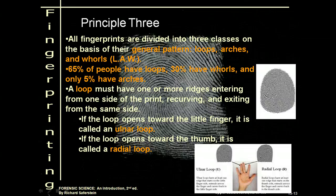Principle three — and this is the really important one for next class. All fingerprints are divided into three classes based on their general patterns: loops, arches, and whorls. You can remember that as LAW — L-A-W. 65% of people have loops, 30% have whorls, and only 5% have arches.